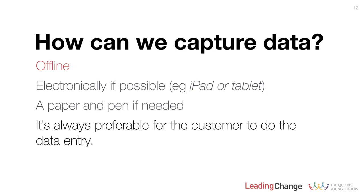If you don't have a website or you often find yourself face-to-face with customers, it doesn't mean you can't capture information — there are just different ways to go about it. The preferred approach is to build an online form and then collect information using an iPad or tablet, which is attractive because it gets the user to do the data entry. That said, if you don't have access to that technology, a pen and paper is super simple — it does require you to do data entry afterwards, but it's far preferable to not collecting any information at all.